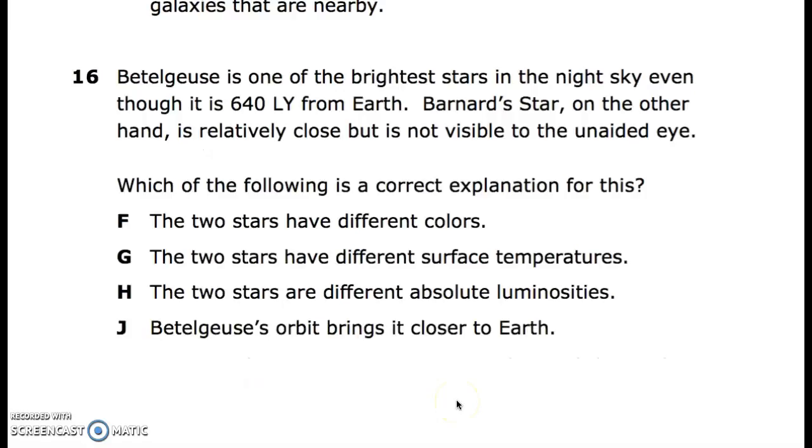16. Betelgeuse is one of the brightest stars in the night sky, even though it is roughly 640 light years from Earth. Bernard's star, on the other hand, is relatively close, but is not visible to the unaided eye. Which of the following is a correct explanation for this? F. the two stars have different colors, G. the two stars have different surface temperatures, H. the two stars are different absolute luminosities, J. Betelgeuse's orbit brings it closer to Earth.